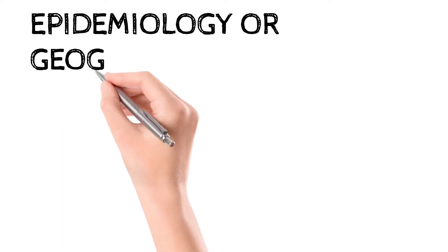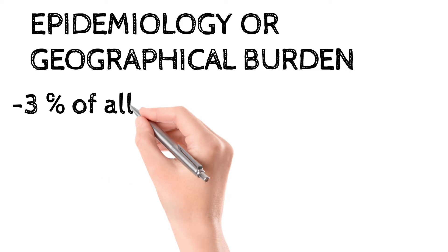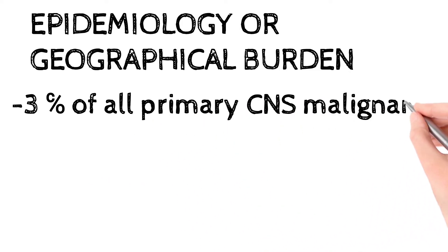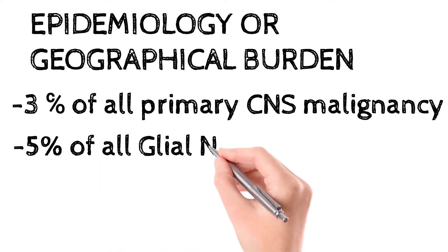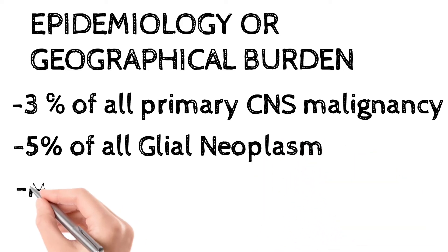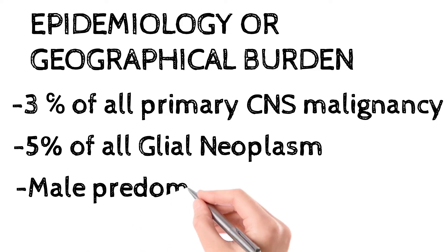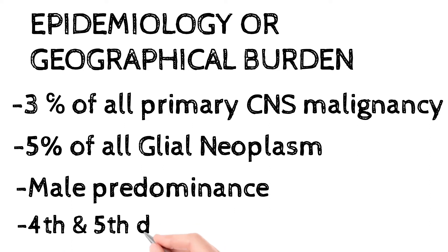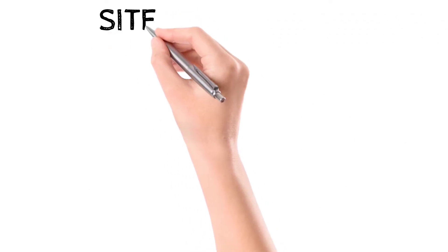Regarding epidemiology, oligodendroglioma constitutes three percent of all primary central nervous system malignancies and five percent of all glial neoplasms. Male predominance is seen. It is commonly seen in the fourth and fifth decade — that is, the 40 to 50 and 50 to 60 year age groups.